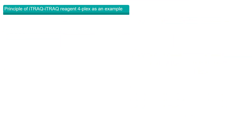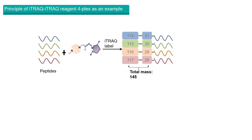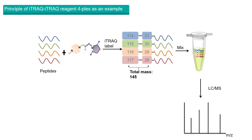A mixture of peptides is obtained by hydrolyzing the protein sample. All peptides in the sample are labeled with different iTRAQ reagents, and all labeled protein samples are mixed. The peptides are subjected to tandem mass spectrometry to obtain the mass spectrum. In the first stage mass spectrometry, after being labeled with different isotopes regardless of which iTRAQ reagent is used, the same peptide from different sources is completely identical in molecular weight, and they appear as the same peak.